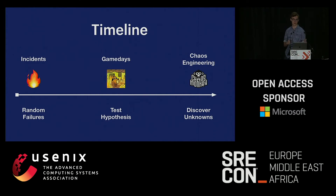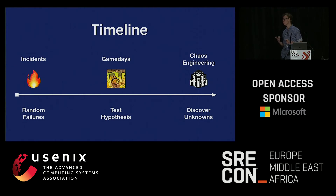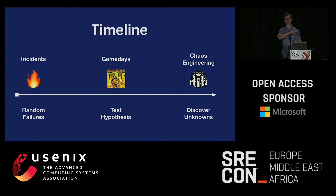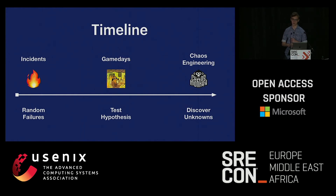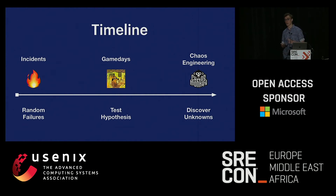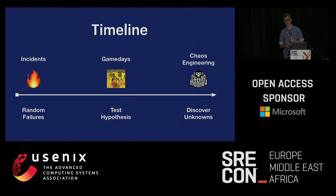These tools fall into three categories. With incidents you get random failures. Game days are really about testing hypotheses — you have to know what you're going to test first, like wondering what will happen when you take down a database and make another service slow at the same time. With chaos engineering tools, you're using the tool to discover unknowns — weird edge case failure scenarios you've never seen before.